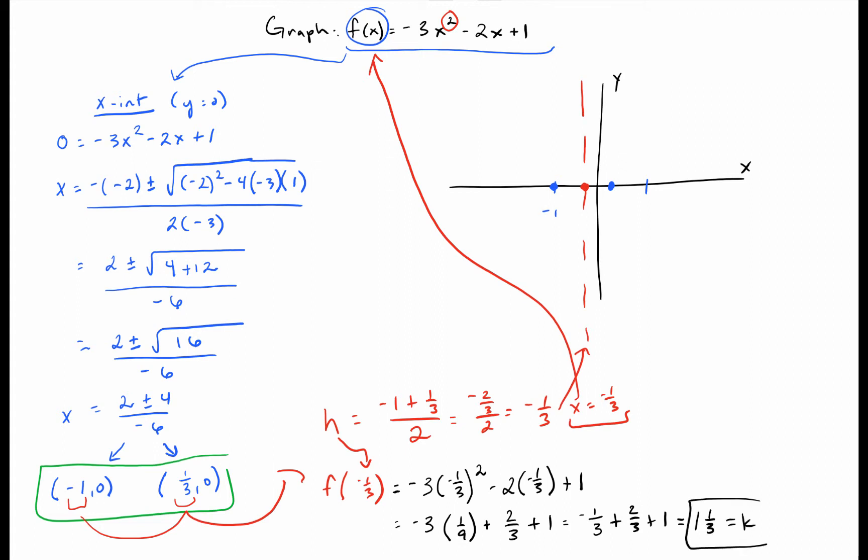So now I have that my k value is going to be up at one and one-third, right there on the line of symmetry. So I've got my vertex of negative one-third, one and one-third.